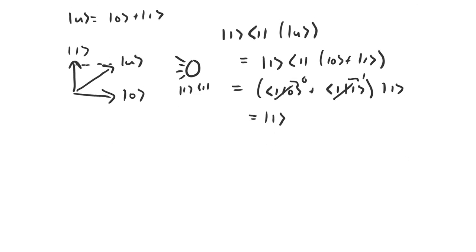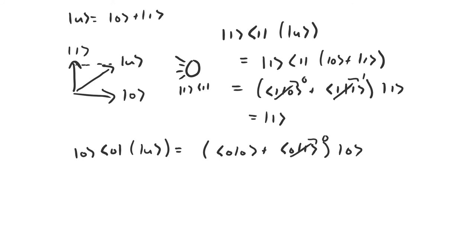So let's see if this holds up if we take the projection operator formed from the basis vector zero and apply it to u. We can do the same thing: the inner product between zero and one is zero, and the inner product between zero and zero is one because zero is also normalized. We take that result and use it as a scalar for the basis vector zero, so the result is just the basis vector zero. We've taken the component of u that's along the basis vector zero and selected it out — the same as if we were to place a light source above u, shine it down, and look at the shadow it forms on the horizontal axis. So these projection operators take some arbitrary vector in this two-dimensional space and project it onto a single vector, reducing the space from two dimensions to one dimension.